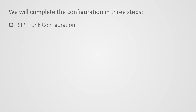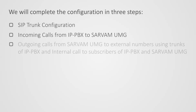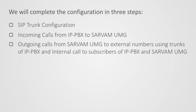Let us start with the configuration. We will complete the configuration in 3 steps: SIP trunk configuration, incoming calls from IP PBX to Servum UMG, and outgoing calls from Servum UMG to external numbers using trunks of IP PBX and internal calls to subscribers of IP PBX and Servum UMG.